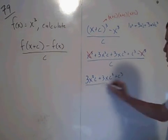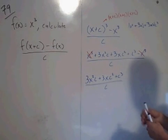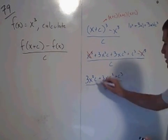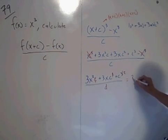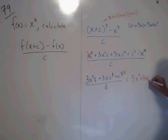And so this c cancels throughout. Your final answer is 3x squared plus 3x c plus c squared.